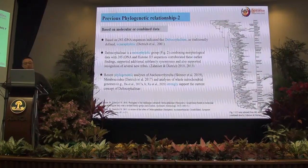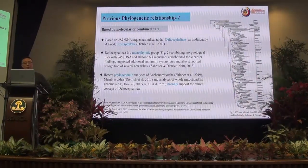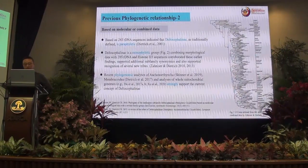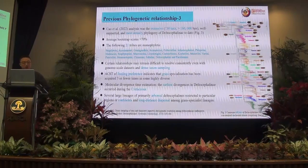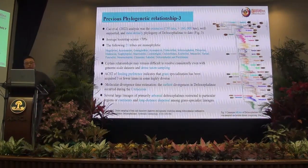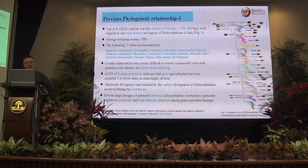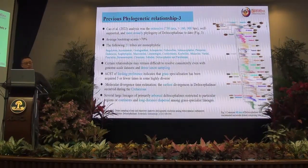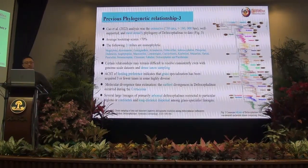Recent phylogenomics analyses from 2019, and the analysis of whole mitogenomic data by Du et al. 2017 and Xiu et al. 2020, strongly support the current concept of Deltocephalinae. The 2022 analysis was an extensive and the most densely sampled phylogeny of Deltocephalinae. This includes 730 taxa with 160 base pairs well sampled. Average bootstrap score is greater than 90%. The following 21 tribes are monophyletic.